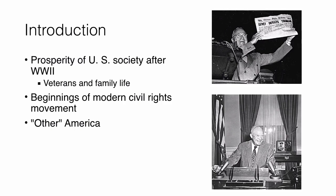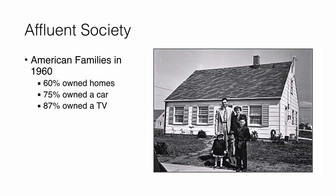The United States in about 1960 is considered an affluent society. For example, 60% of people in the United States, usually whites, own their homes. 75% of them owned a vehicle, a car, and about 87% of them owned a TV. So affluence involves owning things.